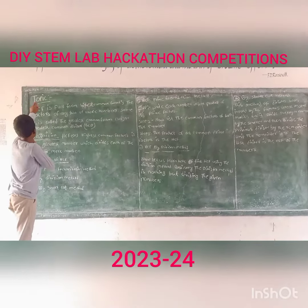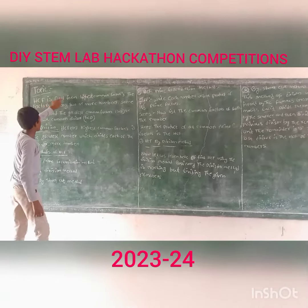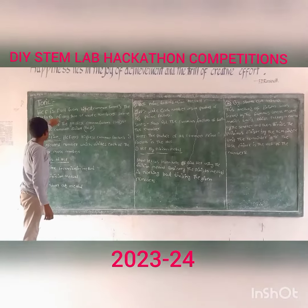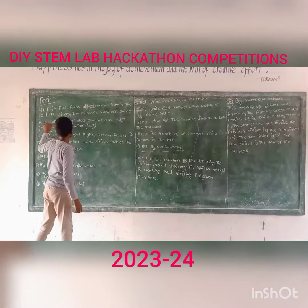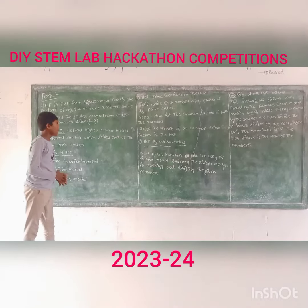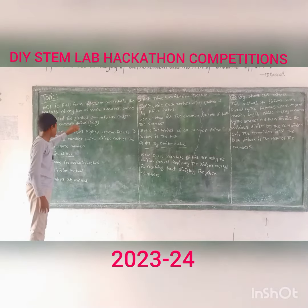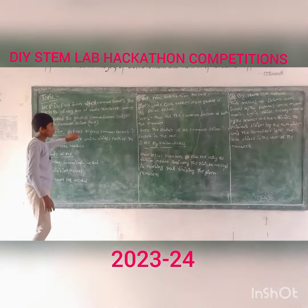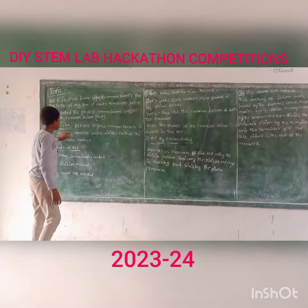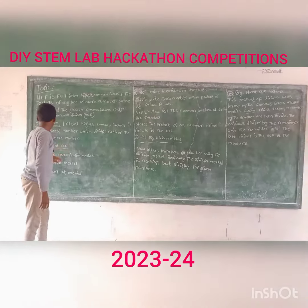Today's topic is HCF. It is the short form of Highest Common Factor — the factor of any two whole numbers. Sometimes it is called the Greatest Common Factor, or the Greatest Common Divisor. Technically, HCF is the greatest number which divides each of the two whole numbers.